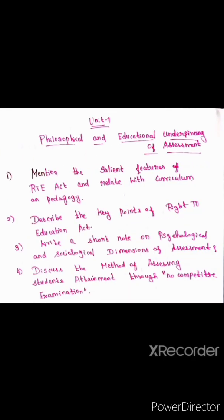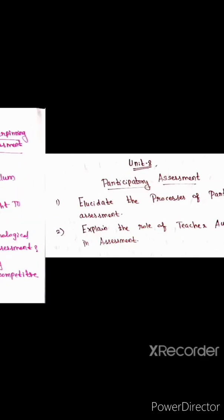Unit 7 is Philosophical and Educational Understanding of Assessment. First, in the Right to Education Act 2009 — we have seen it last year — mention the salient features of the RTE Act. Next, describe the key points of the Right to Education Act. Third, write a short note on psychological and sociological dimension of assessment. Also, discuss the method of assessing students' attainment through low-competitive education.